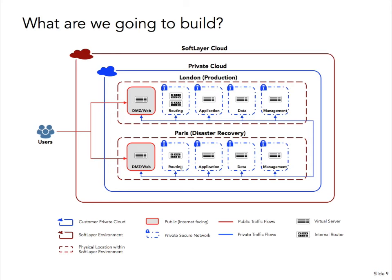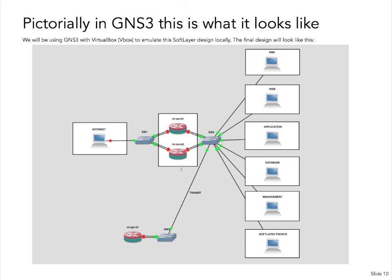What's that going to look like at the end of all this in GNS3? It's going to look something like this, where we're going to have our high availability pair of VYOS machines. We're going to configure our switches as if they were the switches within SoftLayer. We're going to emulate the internet with a PC, and we will show that this PC can only ping through to the DMZ and through to the web. It will not be allowed to have access to any of the other zones because we will be doing this with zone-based firewalling. These will be set up using VRRP so that they will be highly available. We'll test this — we'll shut one down and make sure we can still get through, and then shut the other one down.